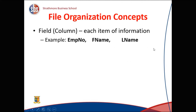Let's talk about file organization concepts. First, a field — these are the columns. Each item of information in a table is called a field or column. For example, employee number, first name, and last name are all called fields, columns, or sometimes attributes.